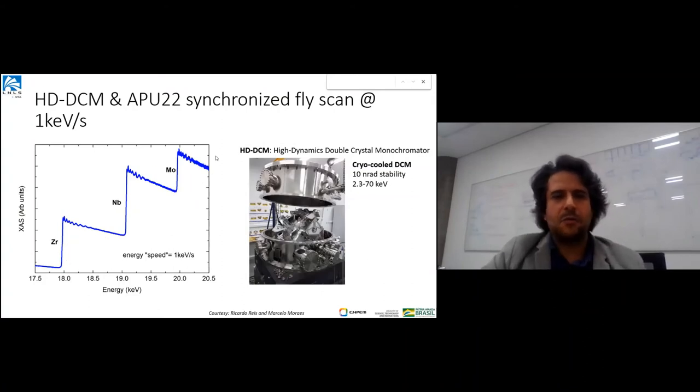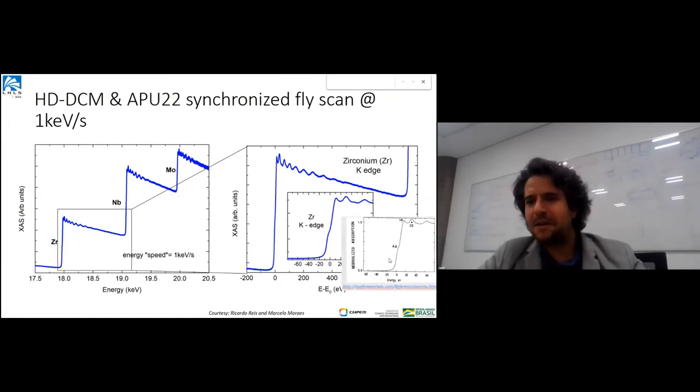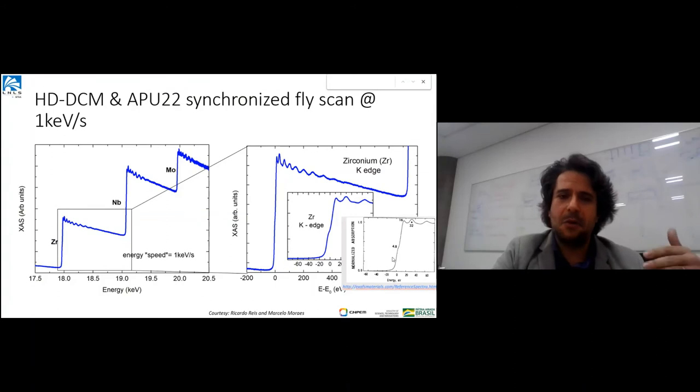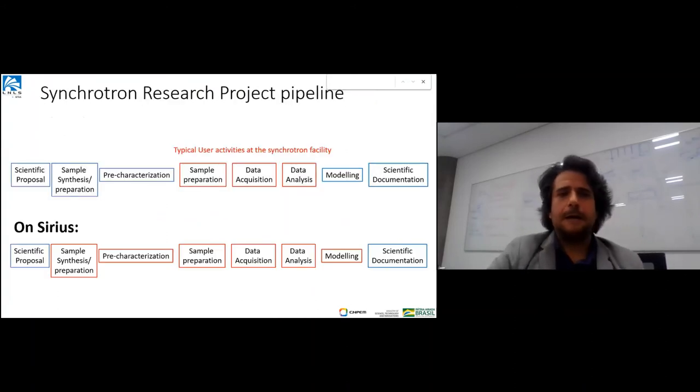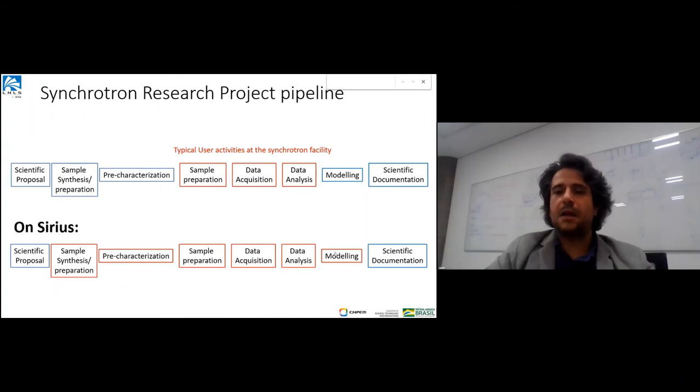This is an example of an accelerator with nano-radian stability even for fast scanning. I'll give one example of what we did recently - an XAFS spectrum for standard samples, synchronizing the undulator with monochromators. We can achieve this nano-stability with high energy speeds and even do textbook examples with fast energy scanning. To conclude, we expect Sirius will provide not only data acquisition and sample preparation like most synchrotrons, but we hope to extend to sample synthesis, pre-characterization tools, and modeling and computing tools.